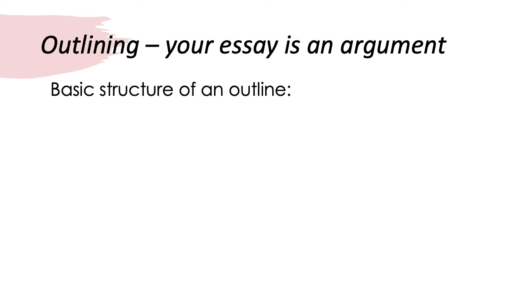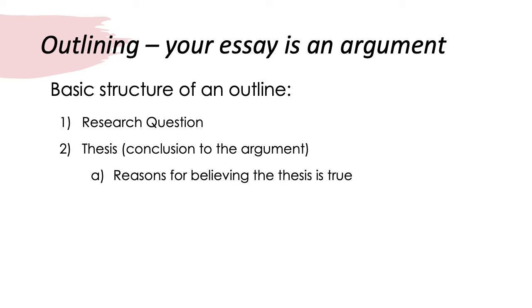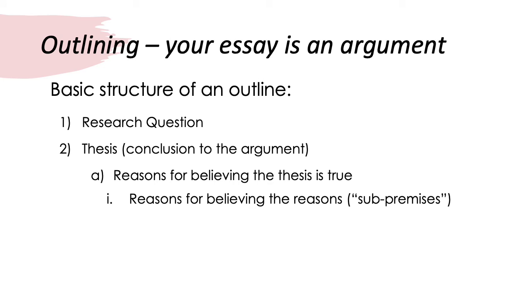So what is the basic structure of your outline? When you produce your outline, the first thing I need to see is the research question. The second thing is the thesis. Then I need to see the reasons for believing the thesis is true — there could be two, three, or four of these. And then you need reasons for believing those reasons: you need to explain, support, and back them up — what we called sub-premises in the previous diagram.